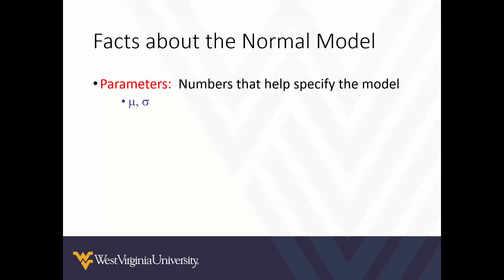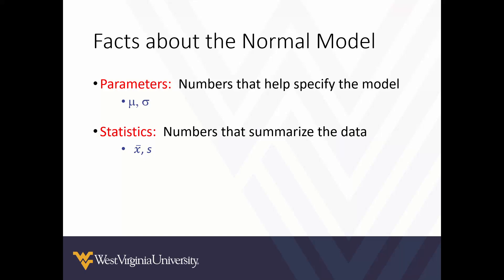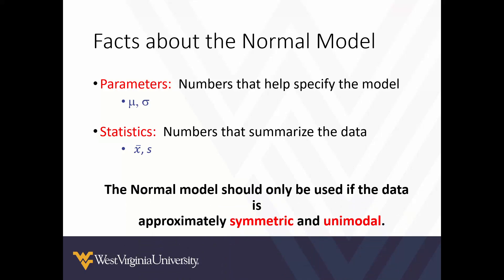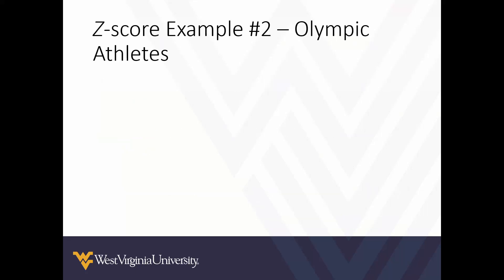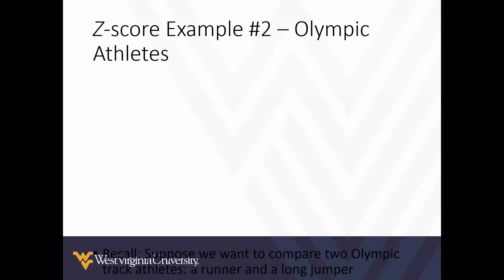We use two parameters to specify a normal model: mu (population mean) and sigma (population standard deviation). When dealing with samples, we use the sample mean and sample standard deviation instead. Z-scores and the normal model should only be used if the data is approximately symmetric and unimodal — this is why being able to identify histogram shapes matters so much.